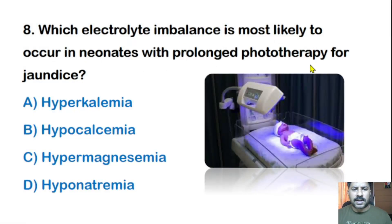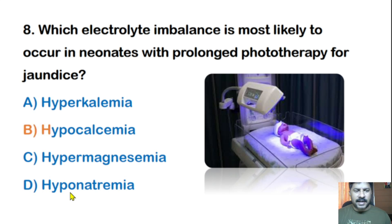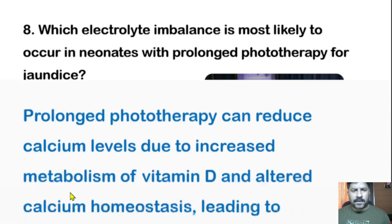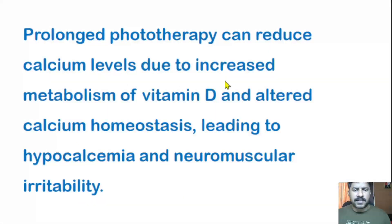Eighth question: Which electrolyte imbalance is most likely to occur in neonates with prolonged phototherapy for jaundice? Options: hyperkalemia, hypocalcemia, hypermagnesemia, or hyponatremia. The correct answer is hypocalcemia. Prolonged phototherapy can reduce calcium levels due to increased metabolism of vitamin D and altered calcium homeostasis, leading to hypocalcemia and neuromuscular irritability.